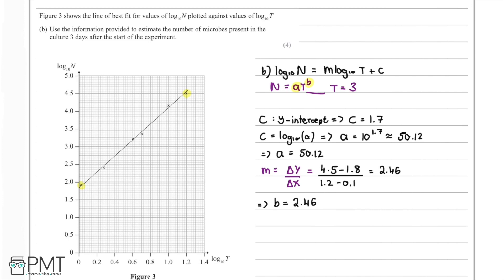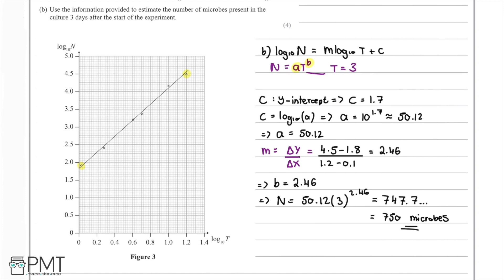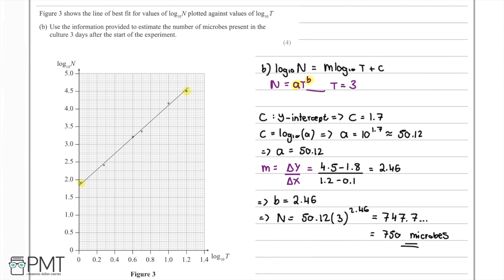Taking the equation for n with our new values for a and b, we substitute t equals 3 to find the number of microbes 3 days after the start of the experiment. So n equals 50.12 multiplied by 3 to the power of 2.46, which gives 747.7. Rounding to 3 significant figures, we have 750 microbes. Therefore, after 3 days there will be around 750 microbes present in the culture.